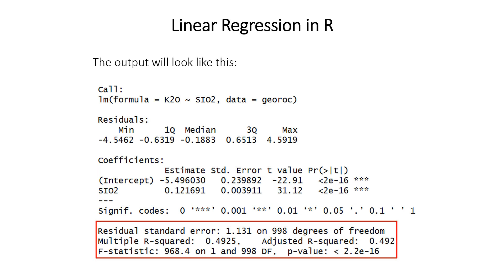The final part of the output gives information about how well the model fits the data. There are two R-squared values — multiple and adjusted. The adjusted one corrects for the number of parameters in multiple regression with more than one independent variable. If you're doing simple linear regression with a single independent variable, use the multiple R-squared. The F-statistic at the bottom tests the significance of the overall model, and in simple linear regression its p-value will match the p-value for your independent variable coefficient.